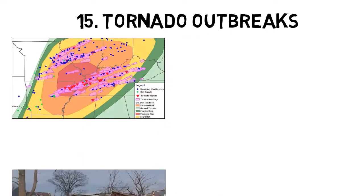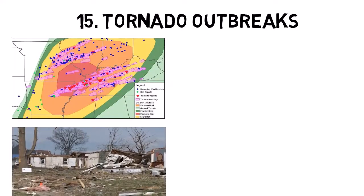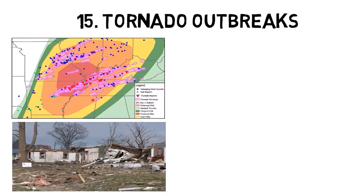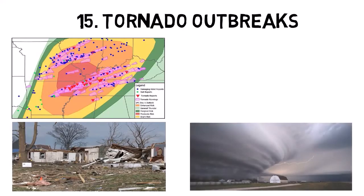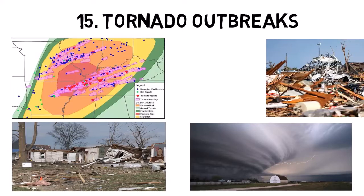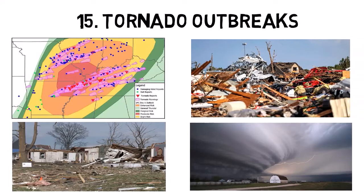Tornado outbreaks are typically associated with severe thunderstorms or supercell storms, which can spawn multiple tornadoes in quick succession. The scale of destruction in a tornado outbreak can be immense, with entire towns or communities devastated.